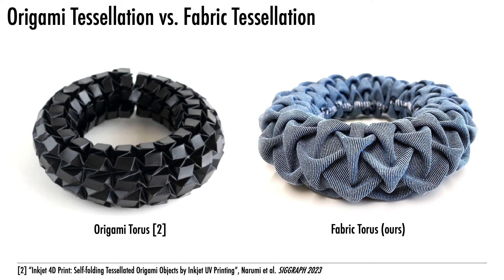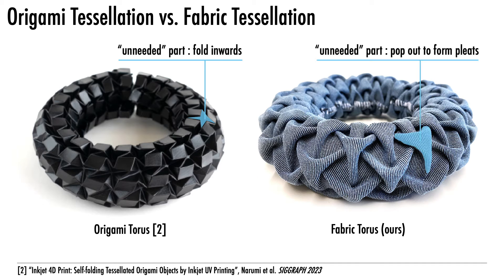In contrast to origami tessellation, where the shape approximation is achieved by folding unneeded parts of paper inwards and hiding them, fabric tessellation approximates the shape by pushing some textile parts outwards to form pleats. The challenge for fabric tessellation lies in designing patterns that yield aesthetically pleasing pleat arrangements while approximating a target shape.